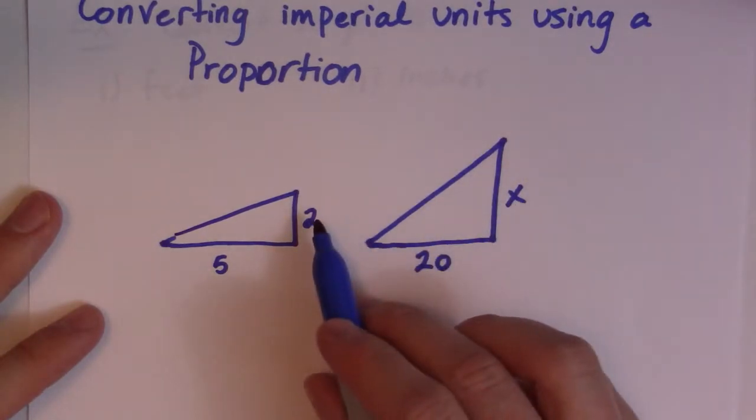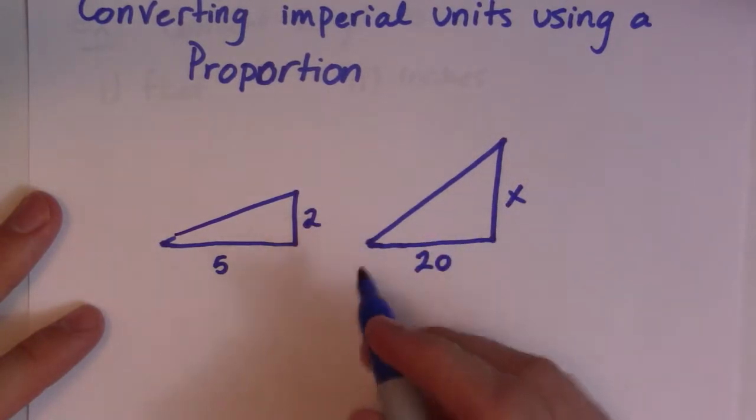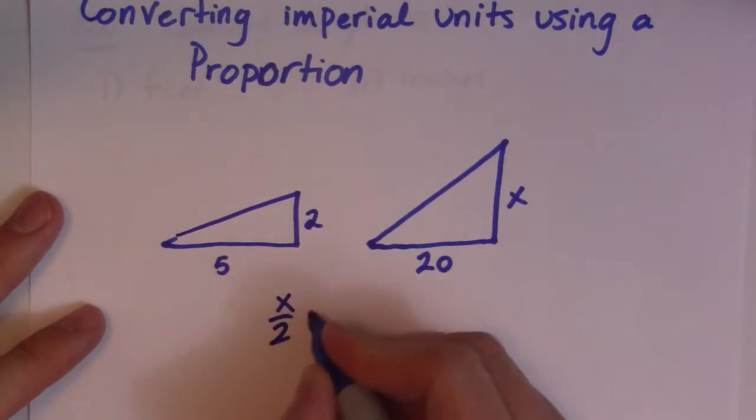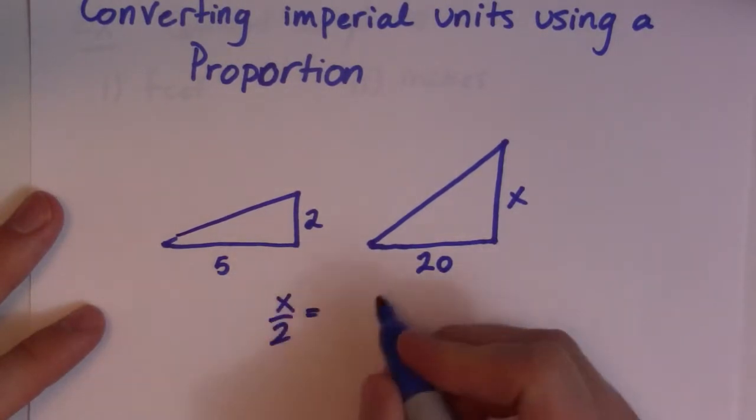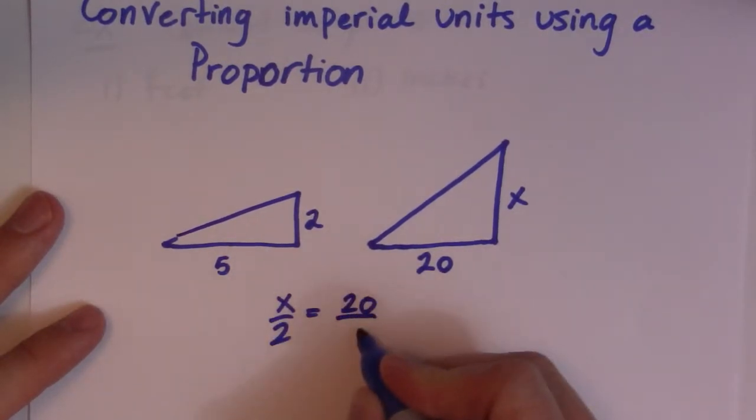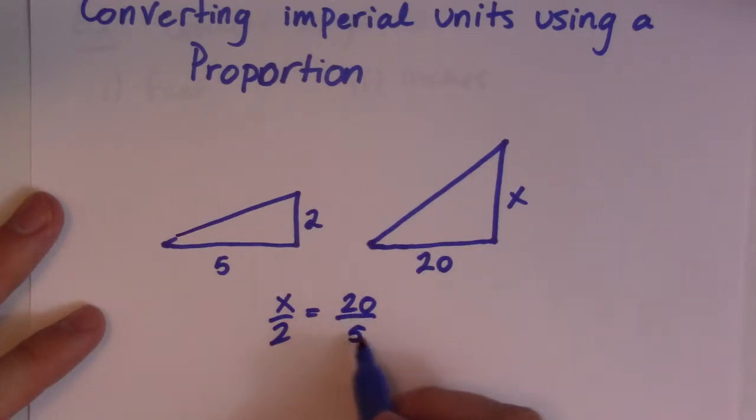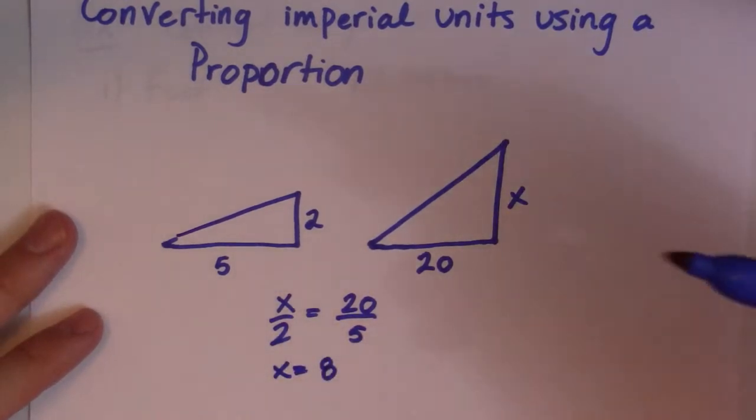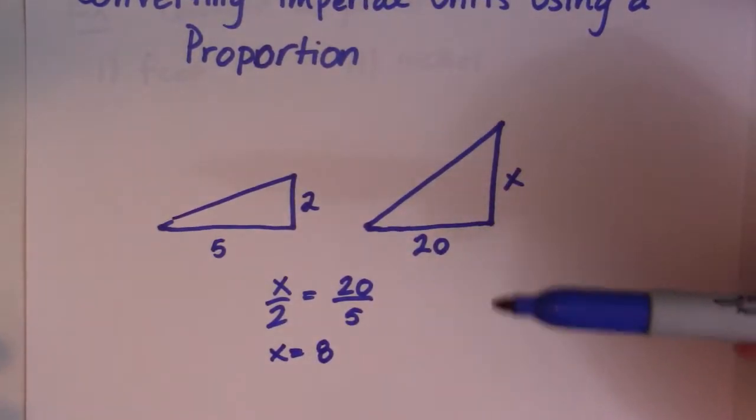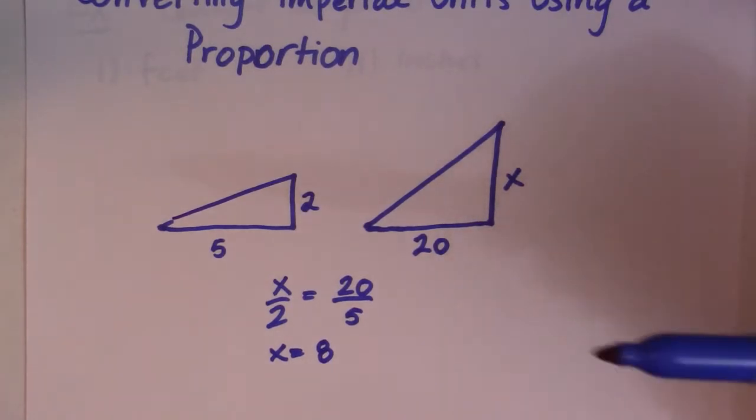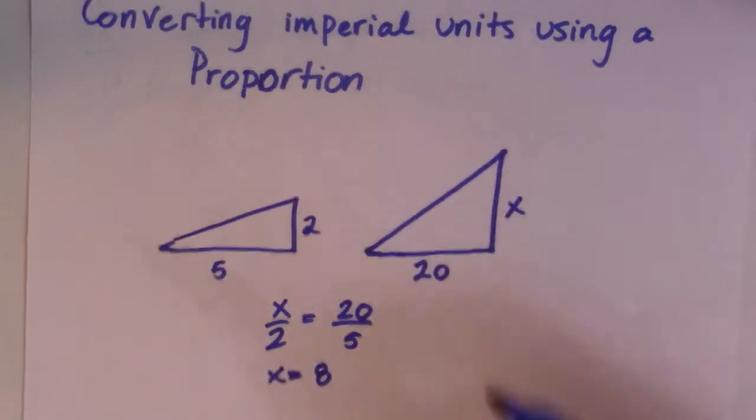So that proportionality statement, we'd match corresponding sides. So x corresponds to 2, so we'd say x over 2 is equal to 20 over 5. And you have this basically mini equation that you need to solve. So then you'd figure out this is 4, cross multiply, so you'd get x is equal to 8. And that's how a conversion factor can work, exactly the same as that scenario.